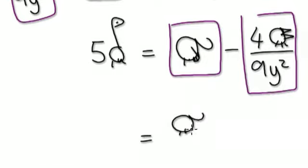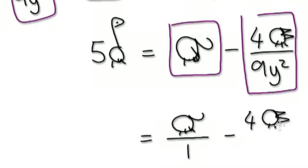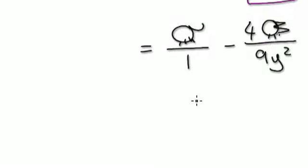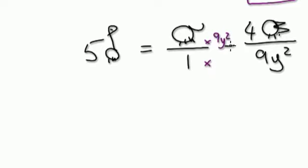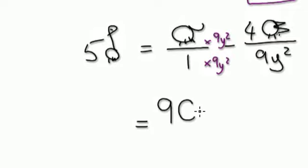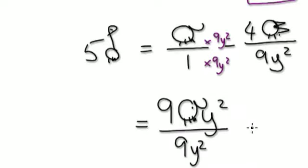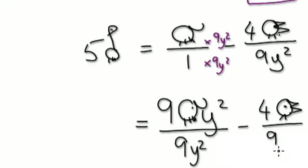Turn the elephant into a fraction. Elephant is the same as elephant divided by one, take away four chickens over nine y squared. Now times top and bottom by nine y squared, just to get the two denominators to be the same. So it will be nine elephant y squared over nine y squared, and this one will be four chickens over nine y squared. Now you can see the two denominators are the same.